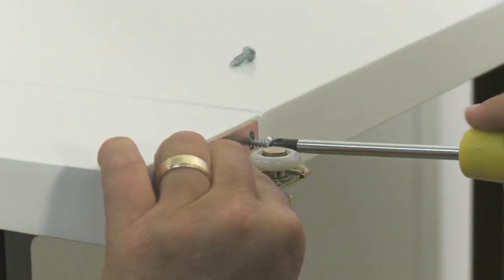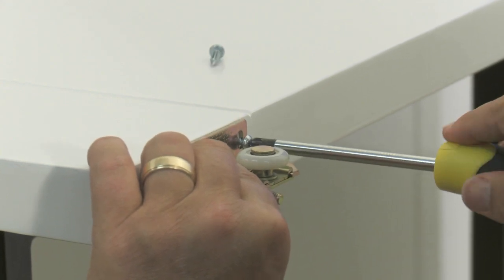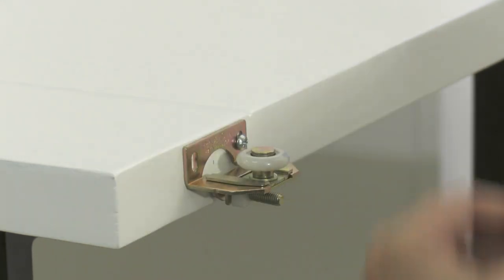Then, using an electric or manual screwdriver, attach the hangers to the door using the screws provided in the kit, ensuring that the wheel is facing the correct way.